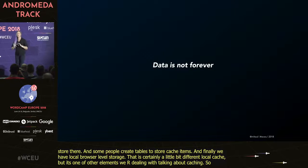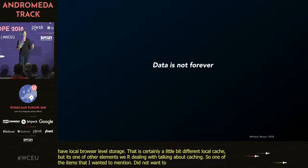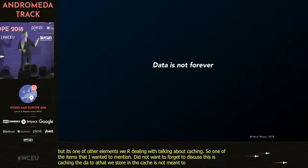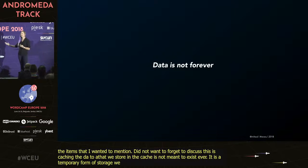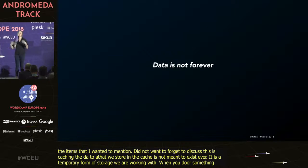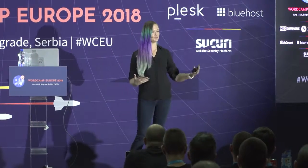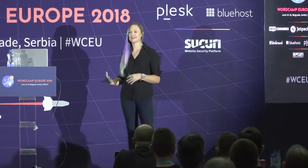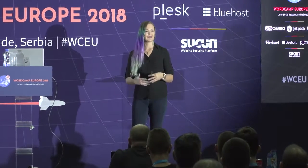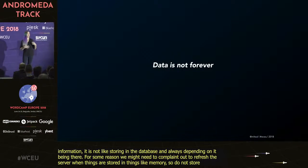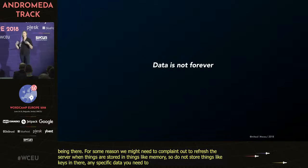One item I wanted to mention: caching and the data we store in cache is not meant to exist forever. This is a temporary form of storage. When you store something in cache, you set an expiration date. Even if you don't set one, this temporary storage is meant to be cleared out and refreshed to go fetch new information. It's not like storing something in the database and always depending on it being there. Do not store things like keys or any specific data that you need to know is there for a long period of time.